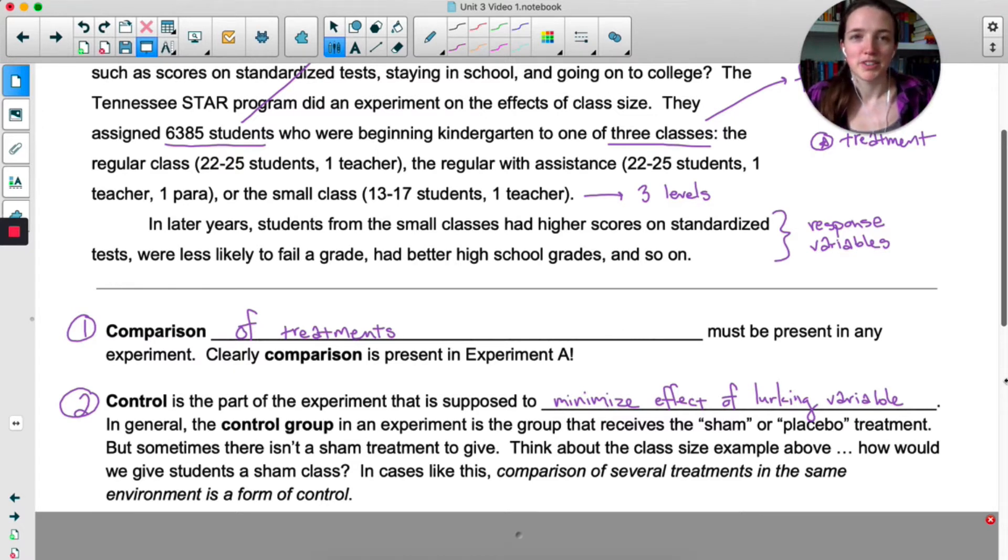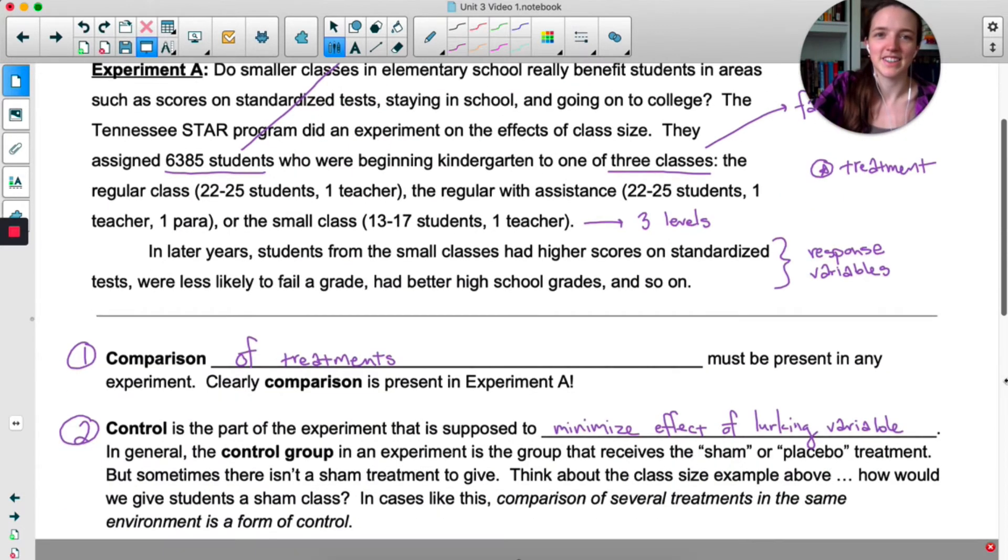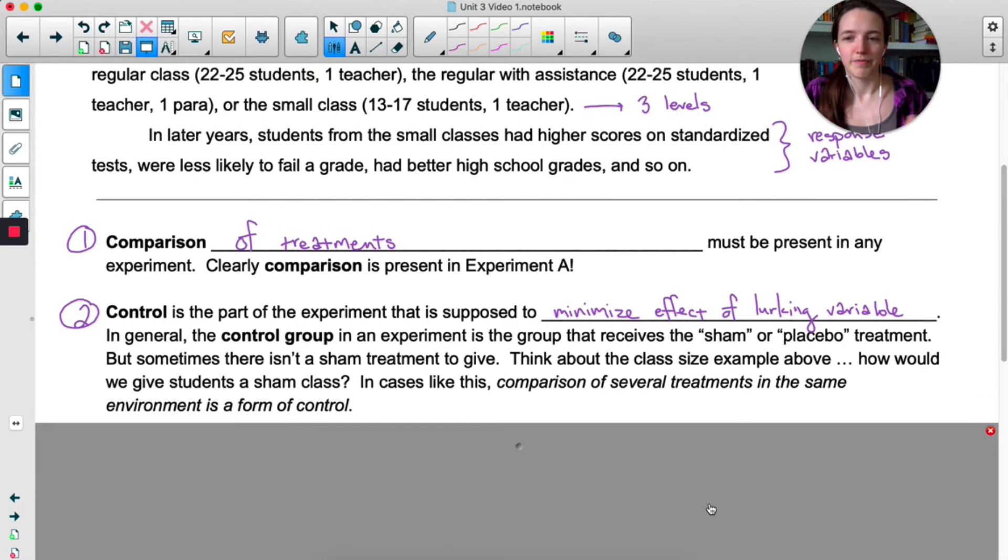Sometimes it's impossible to give a placebo or a sham treatment. For example, Experiment A. What would a sham treatment look like for a bunch of kindergartners? This is your fake teacher. Here's your fake classroom. You're about to get a fake education for a year and we'll compare you to the people who got a real education. Yeah, that's not going to work. So sometimes it's impossible to have a true control group with a sham treatment.